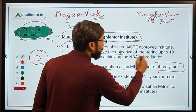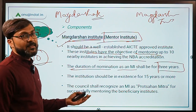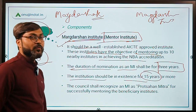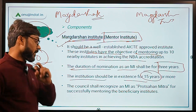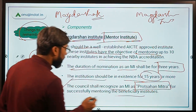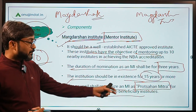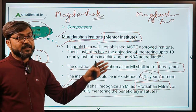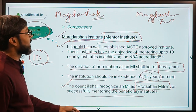The mentor institutes have the objective of mentoring up to 10 nearby institutes in achieving NBA accreditation. The nomination should be for institutes that have been in existence for 15 years or more, meaning they should have at least 15 years of experience in providing technical education. The council shall recognize these mentor institutes as Protsahan Mitra upon successful completion of providing mentorship to the beneficiary institutes.